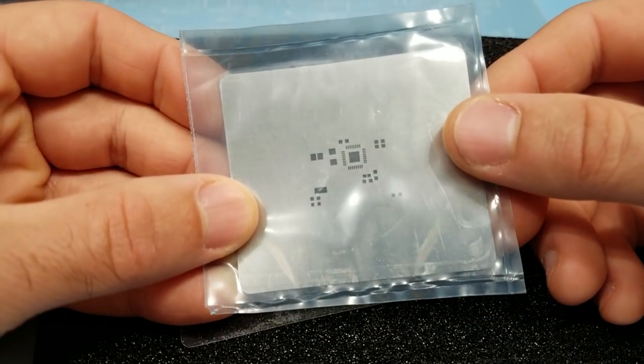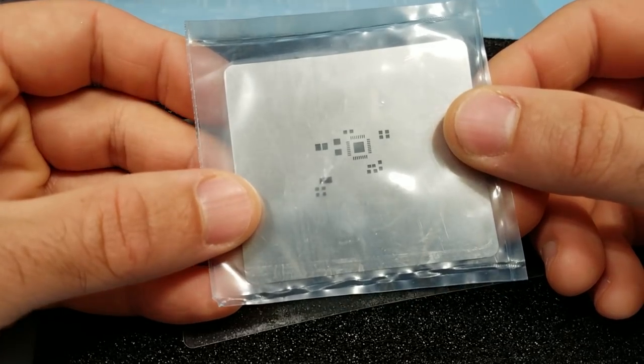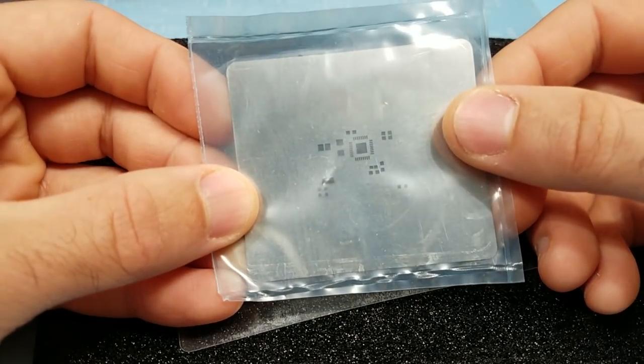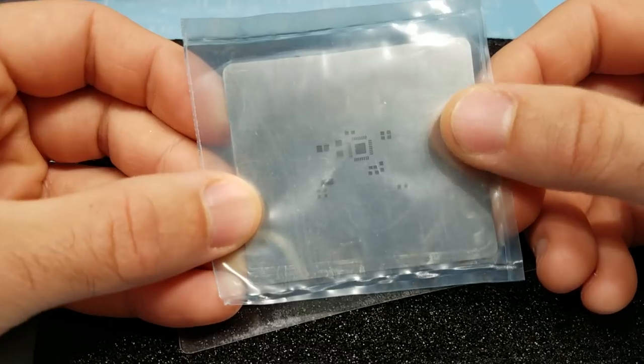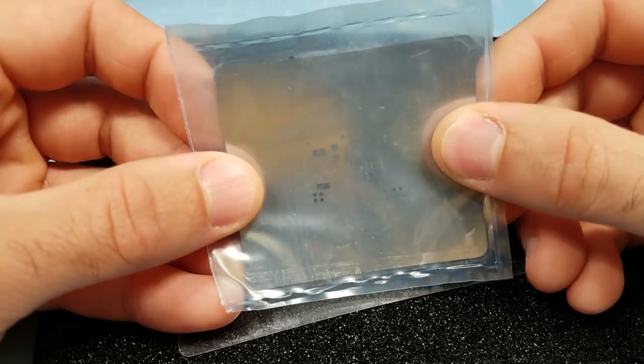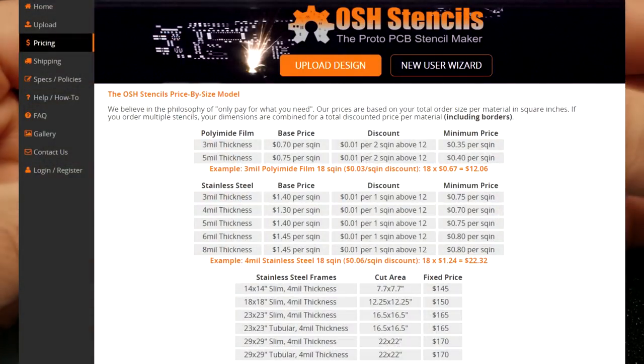There's an online service called OSH Stencils which offers laser cut Kapton stencils and even stainless steel stencils. And a small stencil like this one runs around 10 to 15 dollars and it takes a couple days for the shipping. This is a good service if you don't have any other options.